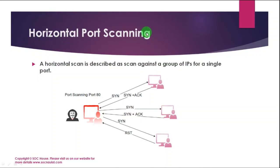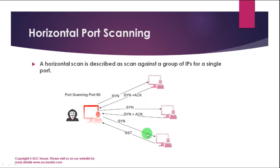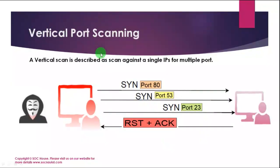Horizontal port scanning is described as a scan against a group of IPs for a single port. In the image, the attacker is scanning a group of IPs for a single port. Vertical port scanning is described as a scan against a single IP for multiple ports. In the image, the attacker is scanning multiple ports for a single IP.